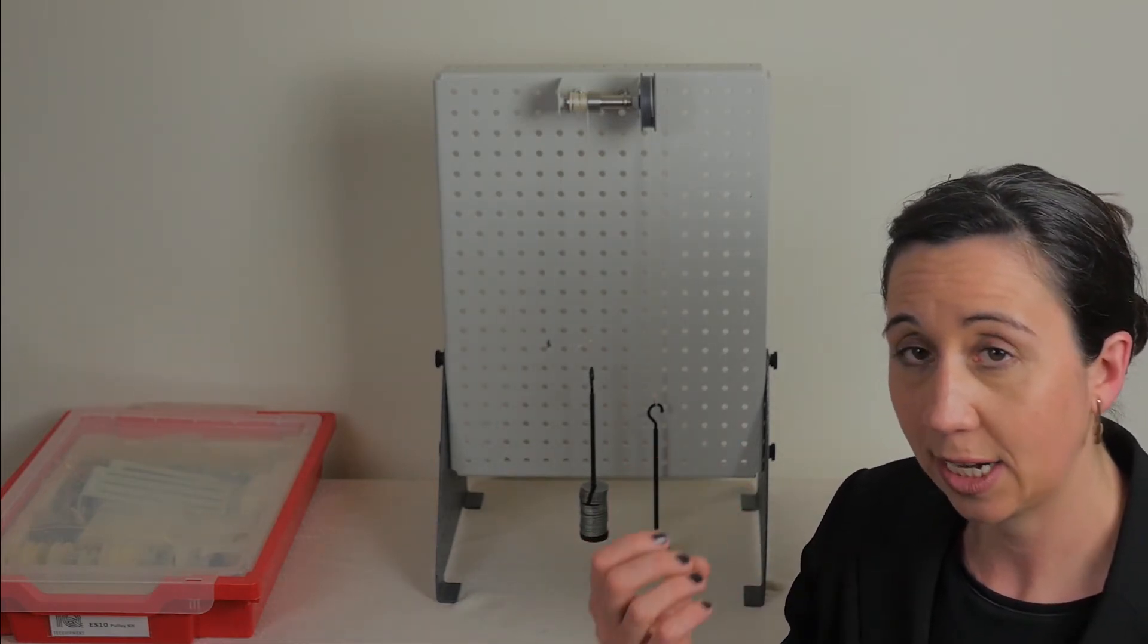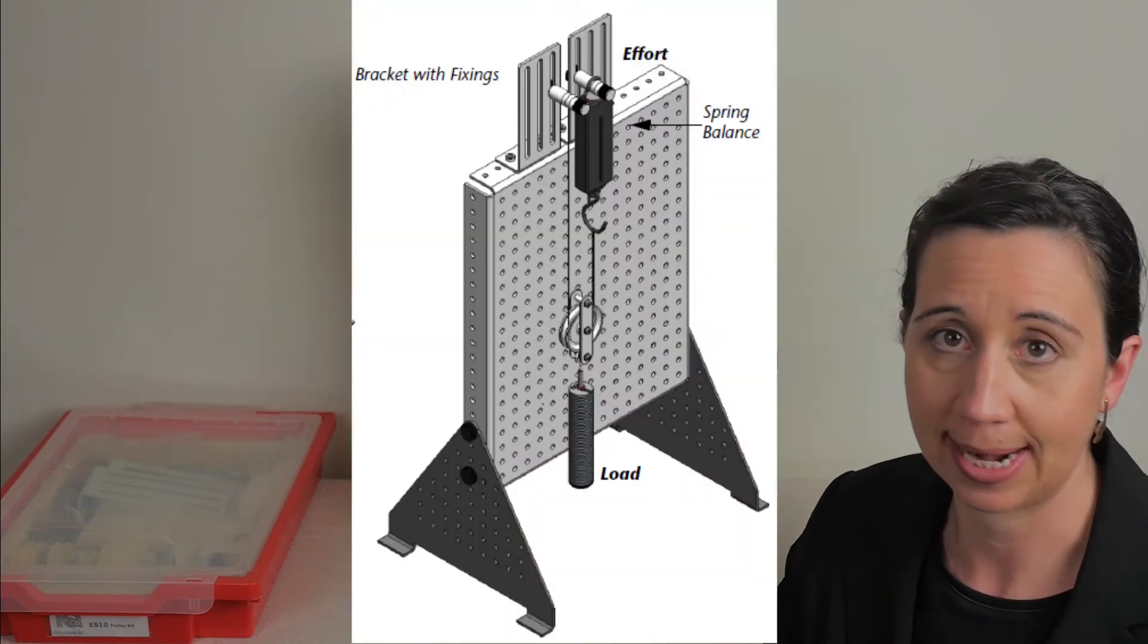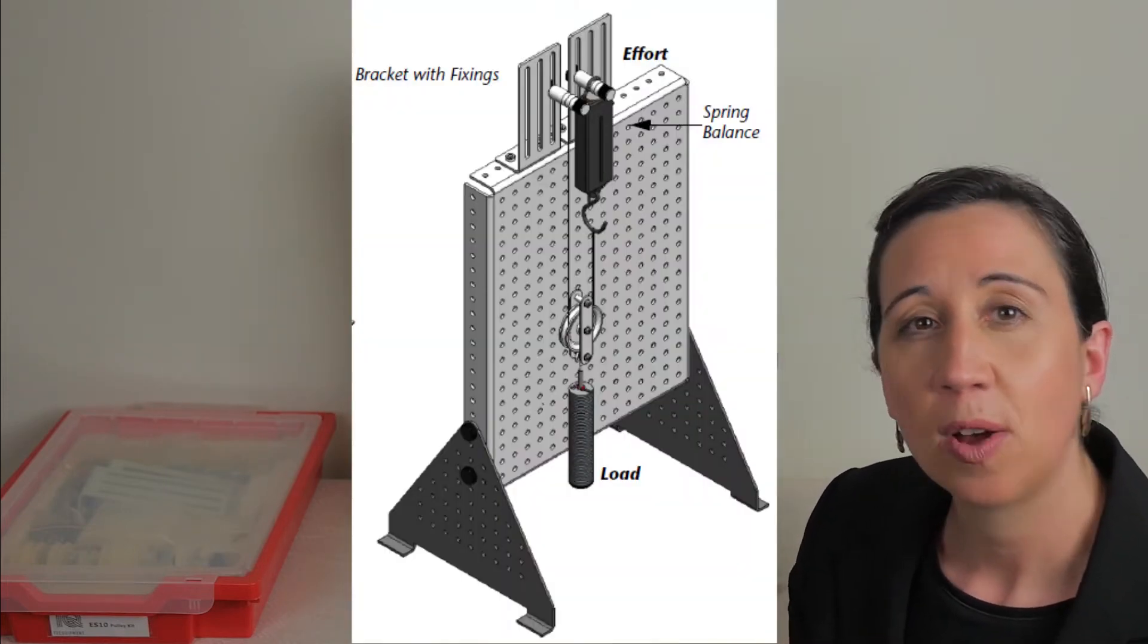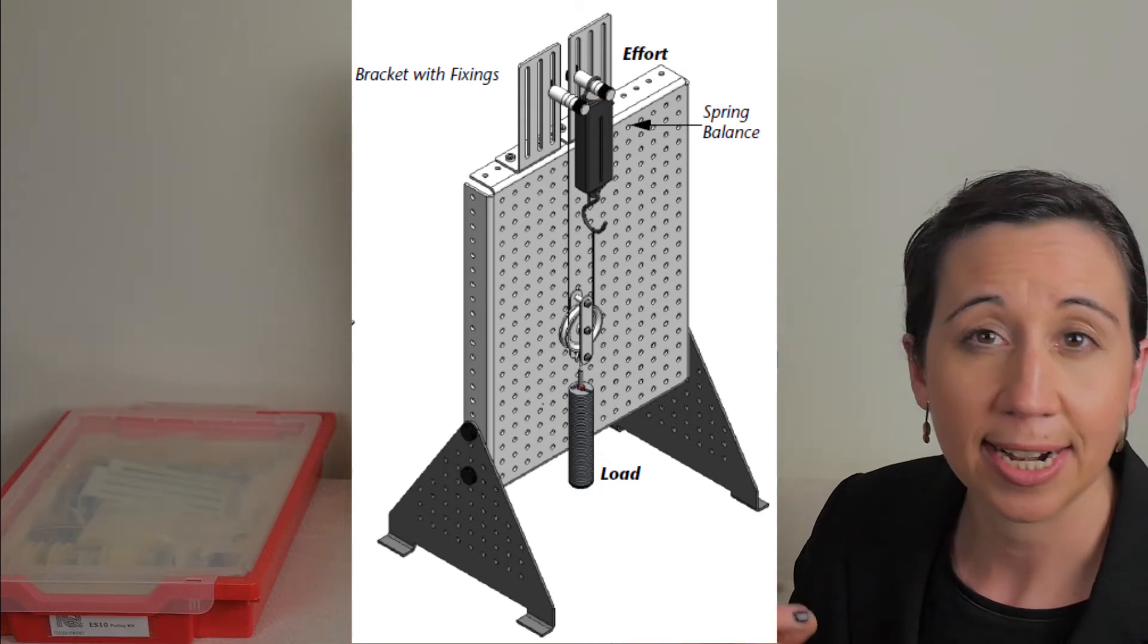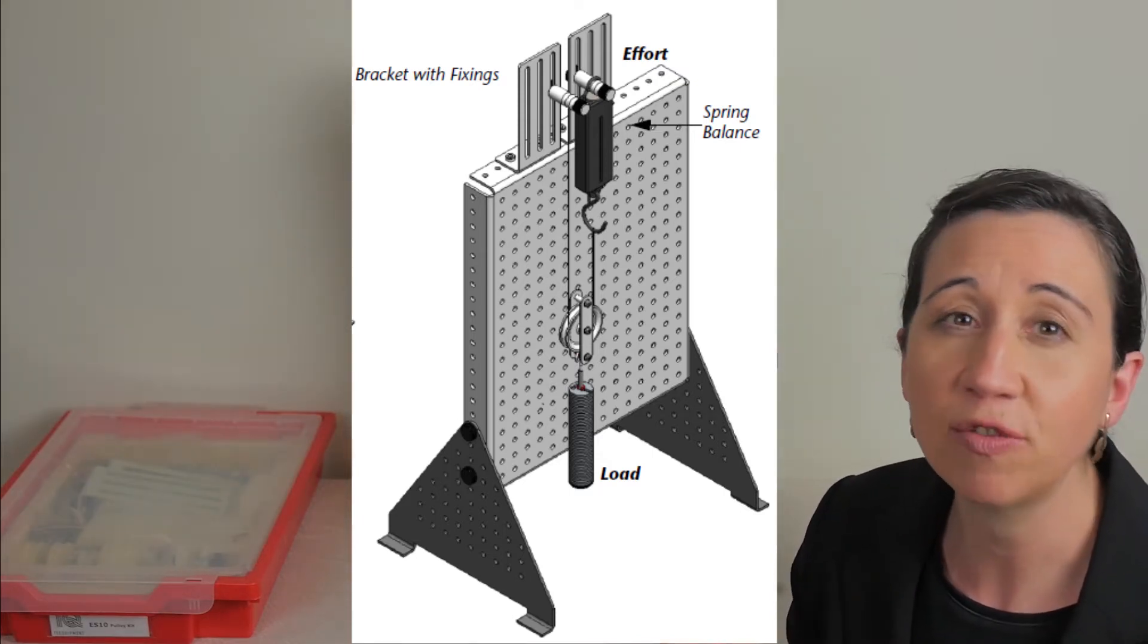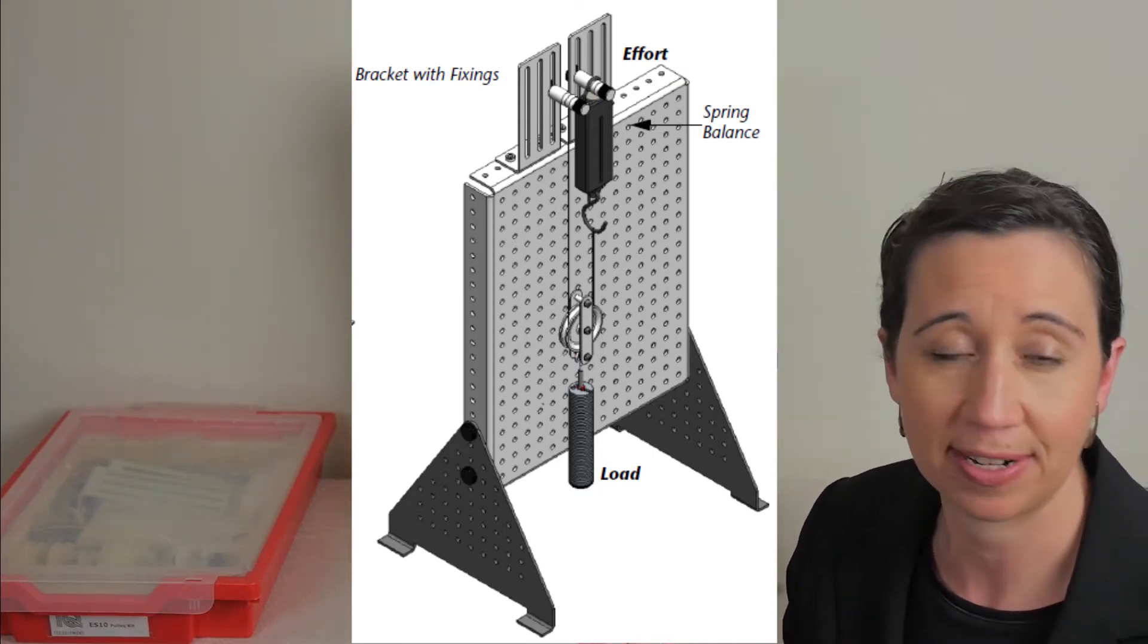The next part of this procedure looks at a moving pulley. Here the load is the weight and the weight hangers are just done, but the effort is represented by the spring balance. When this is set to zero, you can then add a load of 100 grams, then take readings from the spring balance as the effort value.